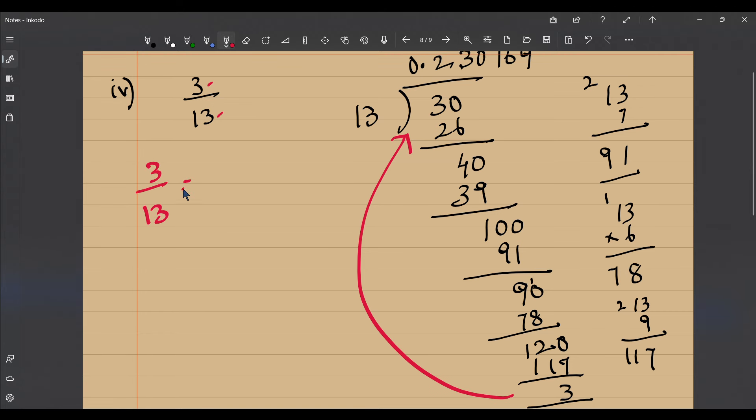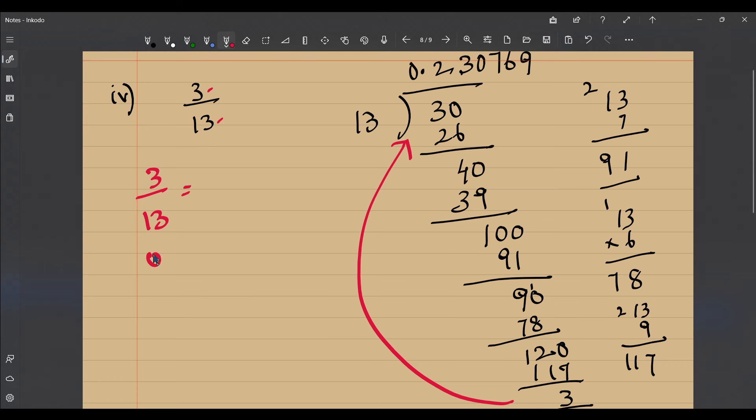So we can conclude that 3 by 13 would be equal to 0.230769 230769 and again it's going to continue forever. Or in short we can say 3 by 13 when divided gives us 0.230769 bar.